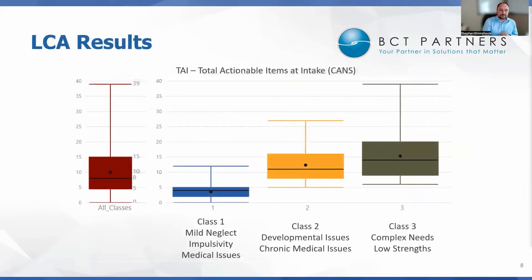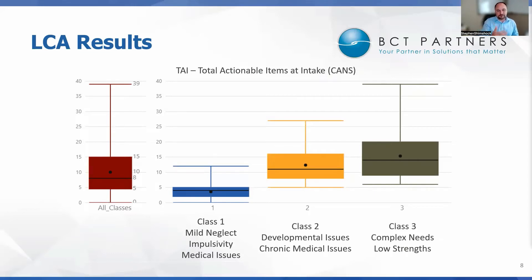The latent class analysis resulted in three groups. The red chart on the left is a box plot of total actionable CANS items at intake — we looked at over 40 CANS items. This shows what I meant by rolling everything into a single average being potentially misleading: looking at the whole population in one box, on average they have 10 actionable items at intake with a median of eight. But the latent class analysis revealed three distinct groups.